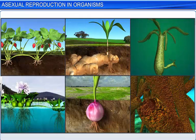Asexual reproduction, an important biological process that ensures continuity of life, occurs differently in different organisms.